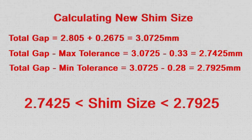This means that we need a shim size that is between these two values. Shim sizes are in increments of 0.05 mm and the nominal shim size that fits the criterion is 2.75 mm.